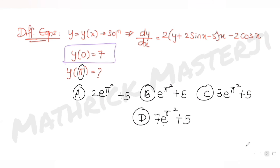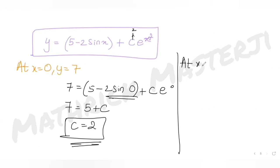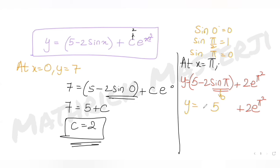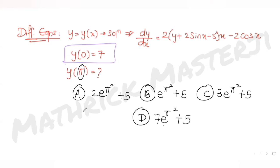Now finding y at x = π: y(π) = 5 − 2sin(π) + 2·e^(π²). Since sin(π) = sin(180°) = 0, we get y(π) = 5 − 0 + 2e^(π²) = 2e^(π²) + 5. This matches answer choice (A), so option A is the correct answer.